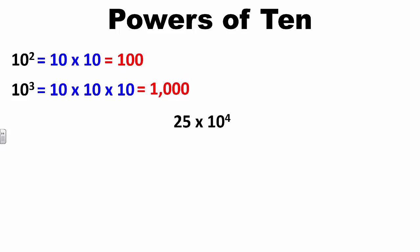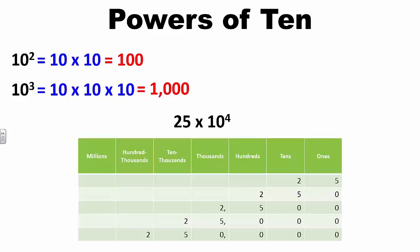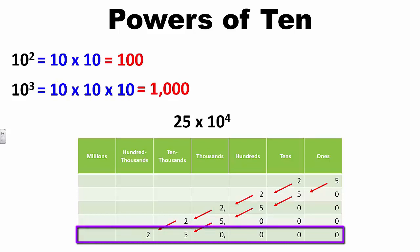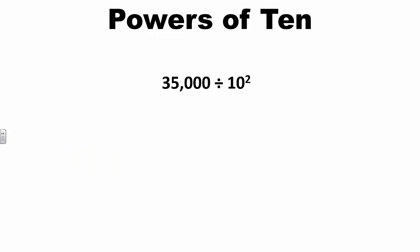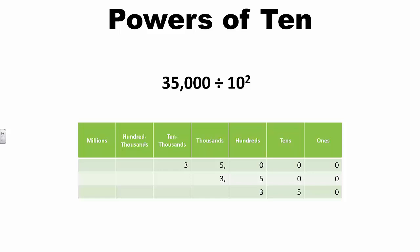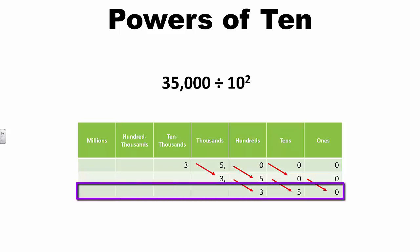Let's consider 25 × 10 to the fourth power. Students should reason that the exponent indicates we are multiplying or making the number 25 ten times greater, 4 times. The digits shift 4 place value positions to the left, so 25 × 10⁴ = 250,000. Students can also relate this to dividing by powers of 10. For example, 35,000 ÷ 10 squared: the exponent indicates we are making 35,000 one-tenth its value 2 times, so the digits shift 2 positions to the right. Therefore, 35,000 ÷ 10² = 350.